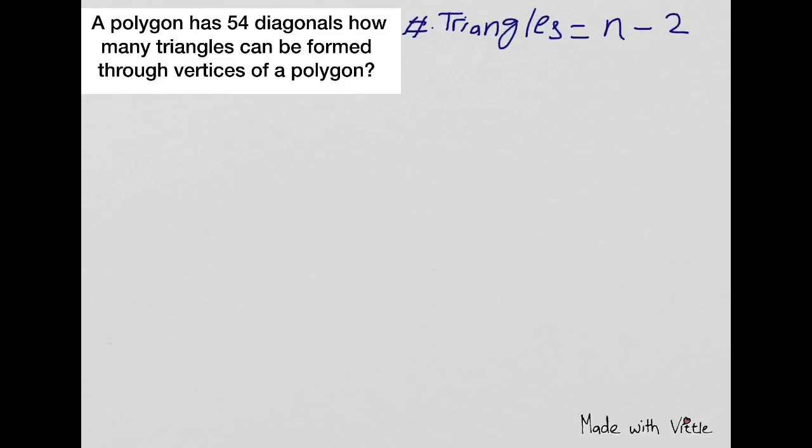We can figure out the number of sides if we know the number of diagonals by using this formula. The number of diagonals is equal to n times the quantity n minus 3, all divided by 2, where n is the number of sides.